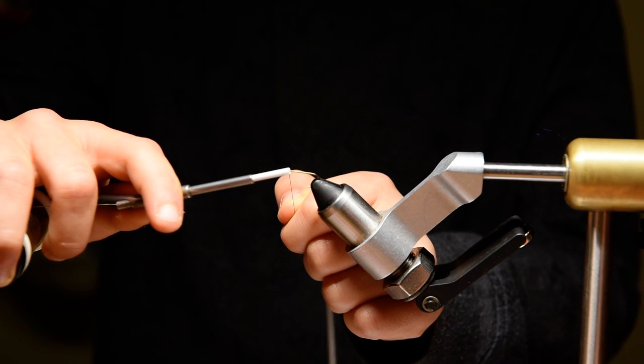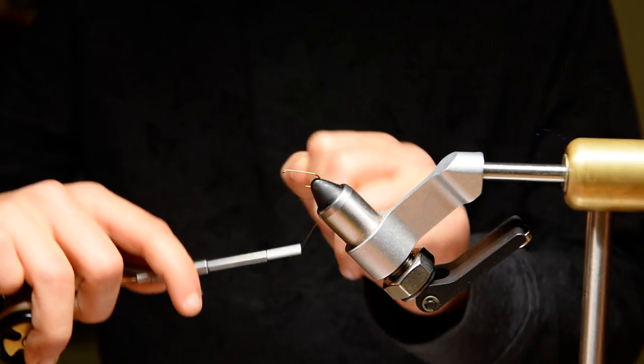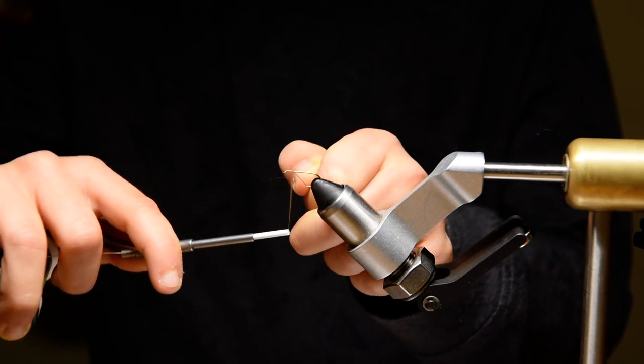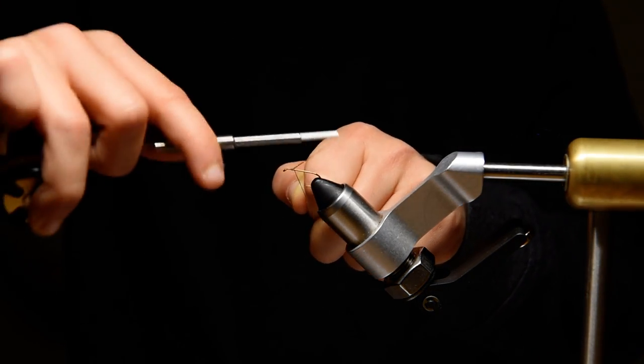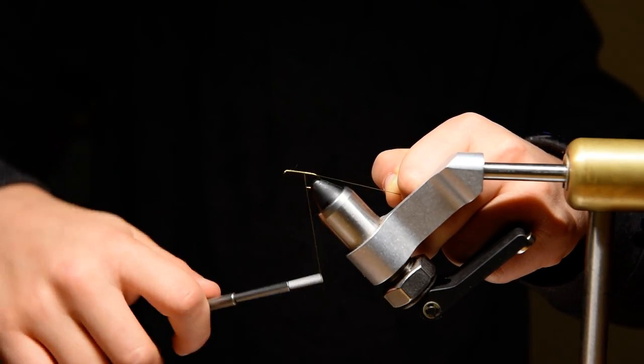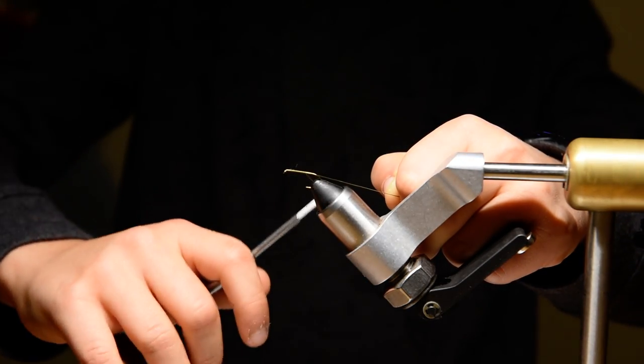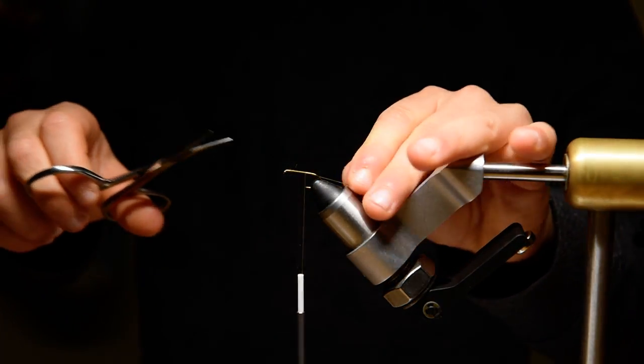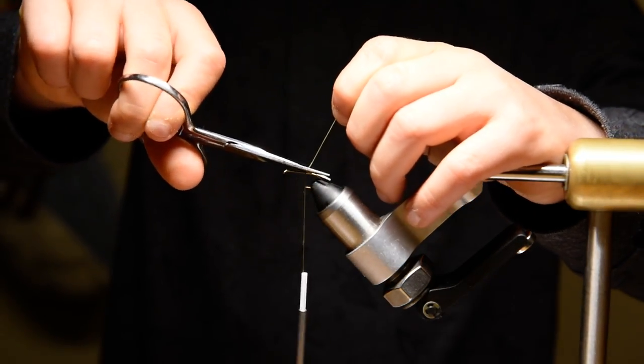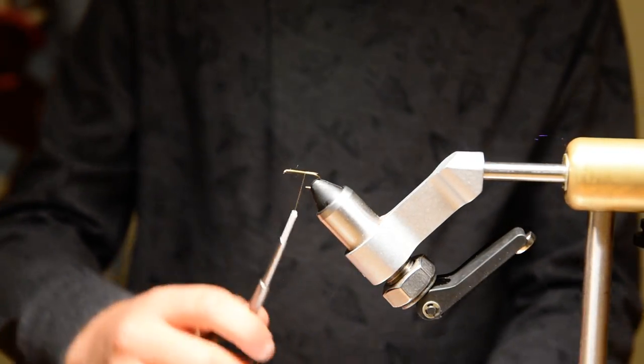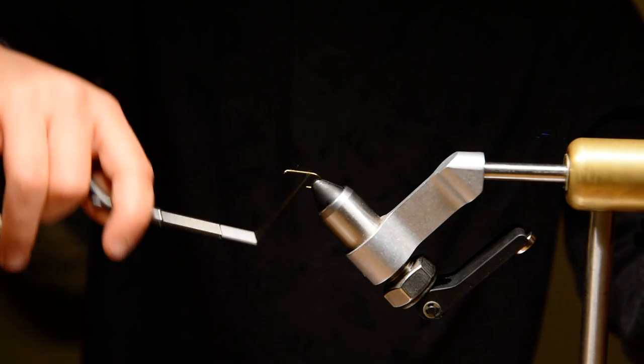So first I'll just go behind the eye and just wrap up all the way to the hook point. Right here. Then we're just going to snip with our scissors, snip up the excess. We don't have to make it perfect because we're going to wrap it back.